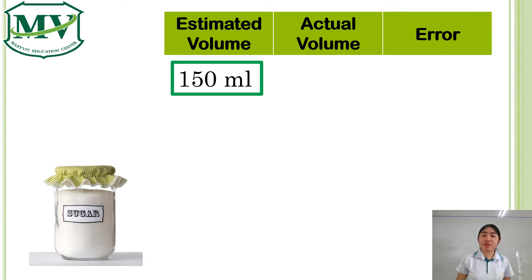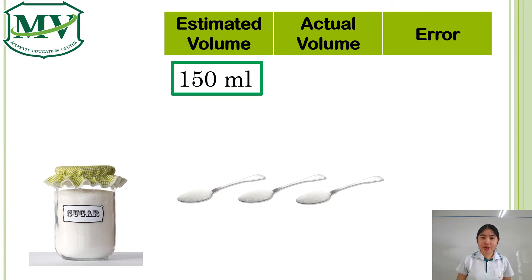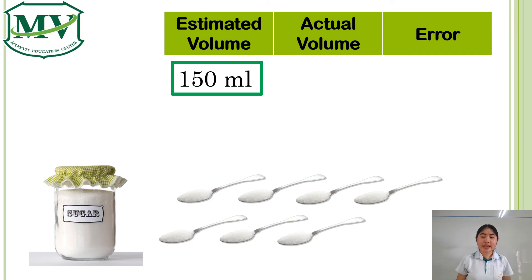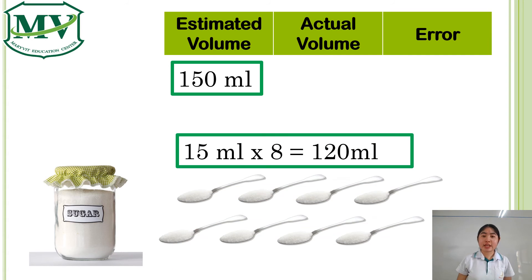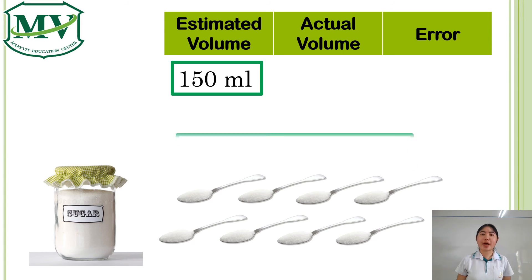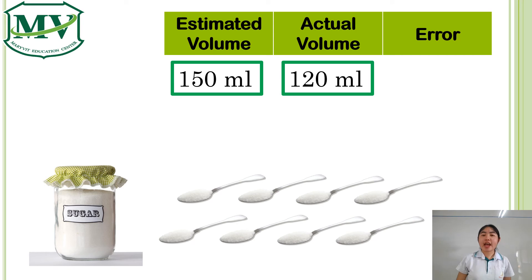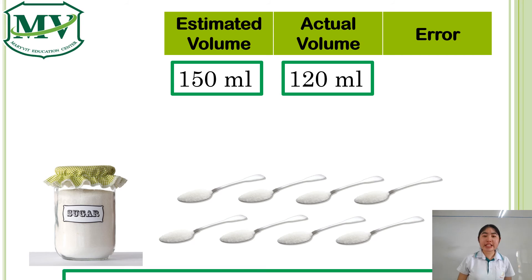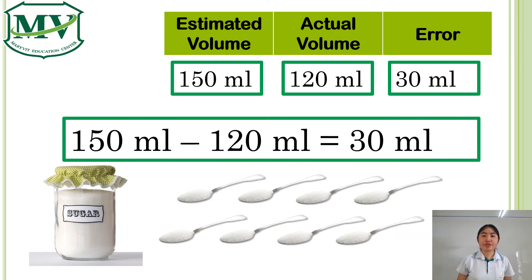We check that the actual volume of sugar in the jar is 1, 2, 3, 4, 5, 6, 7, and 8 tablespoons only, which is 15 ml times 8, equal to 120 ml. The error in our estimation is 150 ml minus 120 ml, equal to 30 ml.